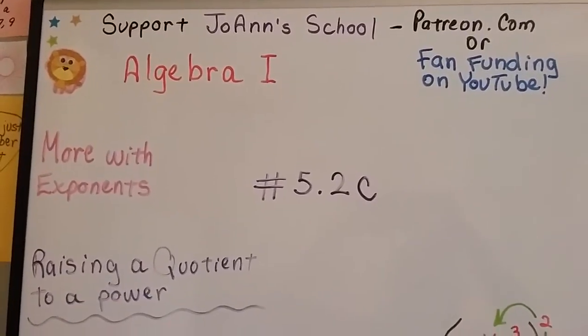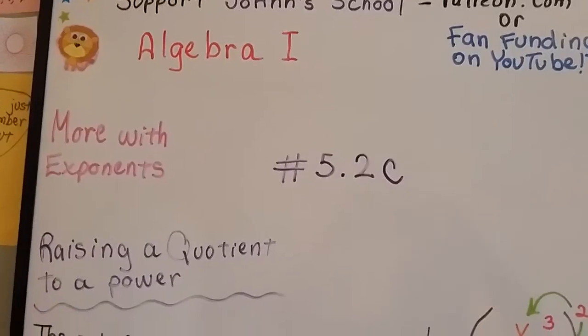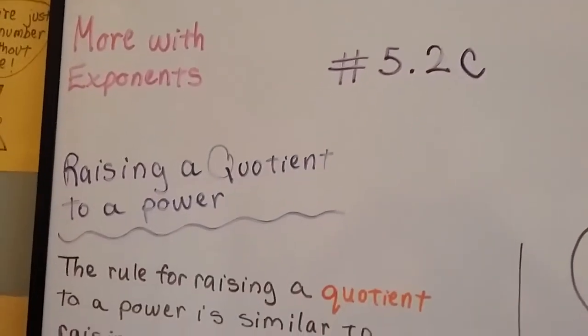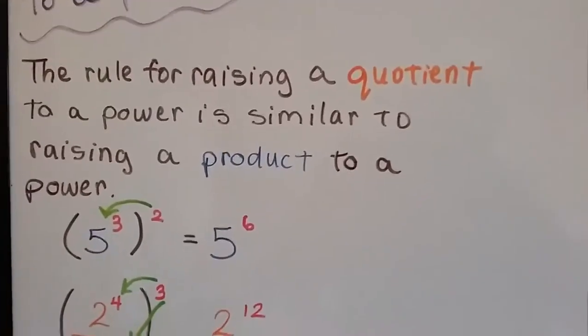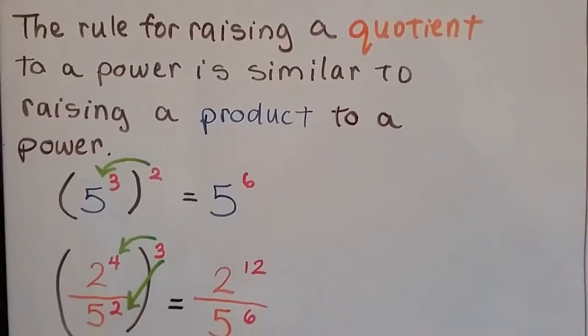Algebra 1 number 5.2c. We're finishing up talking about exponents, and this is raising a quotient to a power. So the rule for raising a quotient to a power is similar to raising a product to a power.